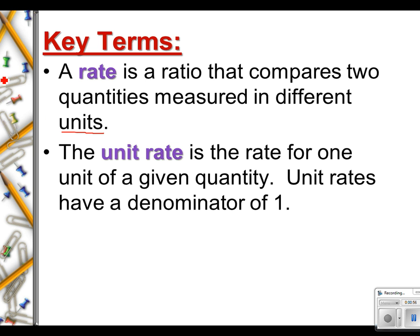All right, a unit rate. A unit rate is the rate for one unit of a given quantity. Unit rates have a denominator of one. Okay, so we're looking at the rate of one. How far are you going every hour? How fast can you run per minute? How long does it take you to run for one mile? It's always about one. How much does one gallon of milk cost at the store? What are you paying for one dozen eggs? It's always what the rate is for one. That's what it is.